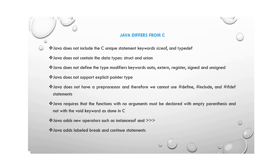Java differs from C in several ways. First, Java does not include C-unique keywords like sizeof and typedef, whereas C programming includes these keywords. Second, Java does not contain the data types struct and union, whereas C has both — struct is used for defining structures and union is used for defining unions. Third, Java does not define type modifiers like auto, external, register, signed, and unsigned, but C does.